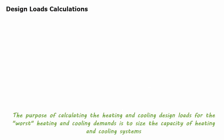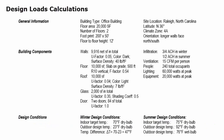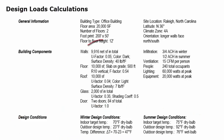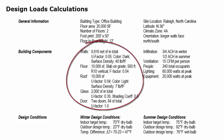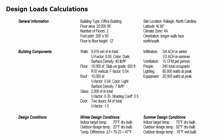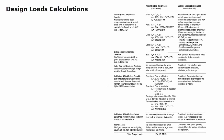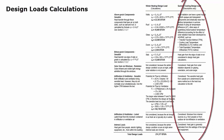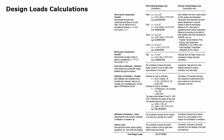The purpose of calculating the heating and cooling design loads for the worst heating and cooling demands is to size the capacity of heating and cooling systems. The required inputs include design indoor and outdoor conditions, building size and construction data such as R-values of walls and solar heat gain coefficients of windows, and internal loads from within the conditioned spaces such as occupants, activity level, appliances, and equipment. The example shows the steps and calculations of the heating design load. The parameters for cooling design load are discussed, but the actual calculations, which are fairly complex, are not in the scope of this discussion.